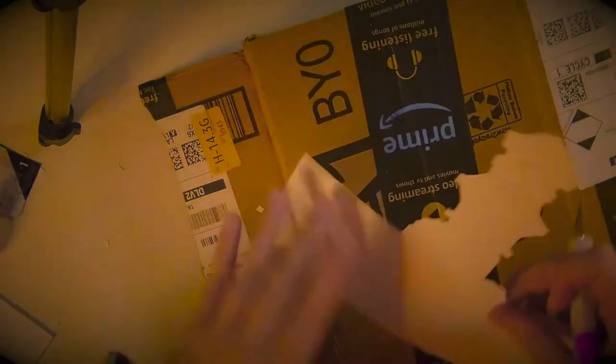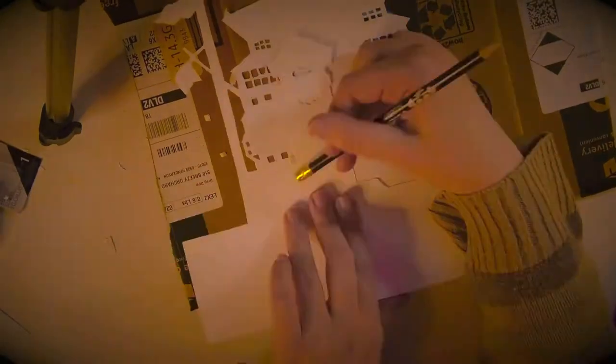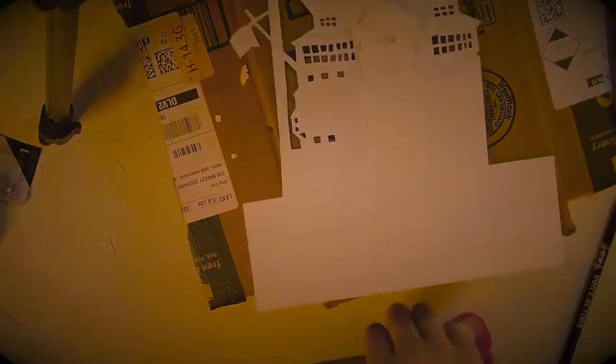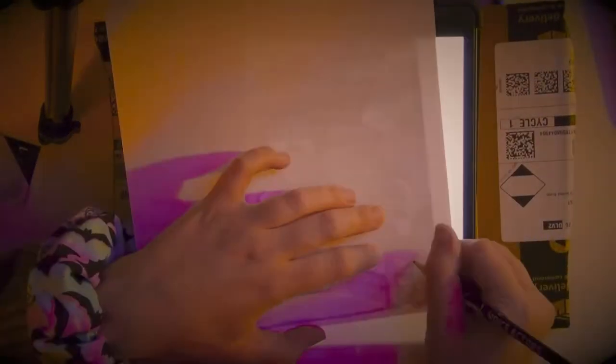Here I'm using an exacto knife to cut out the layers and of course you want to do all of this on an ugly Amazon box. Looks great on video. I changed out exacto blades like three times during this project. I'm not sure if it was necessary but it worked.